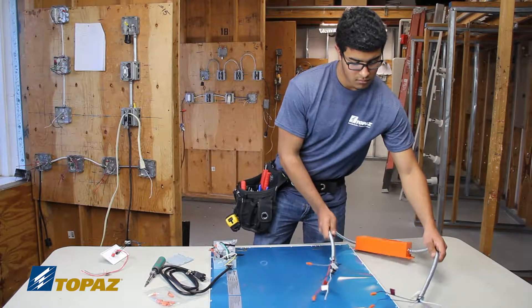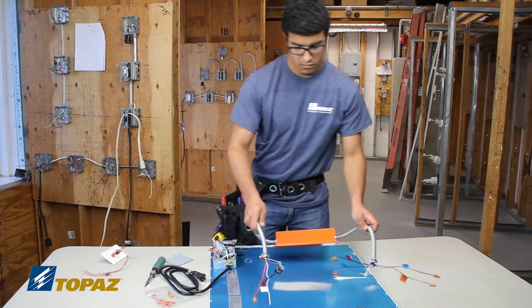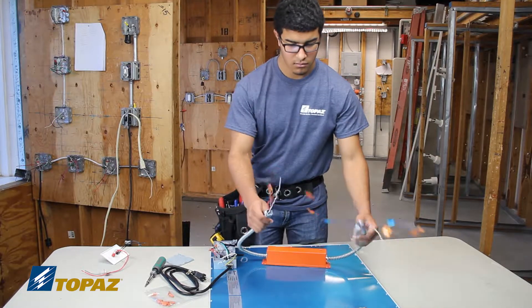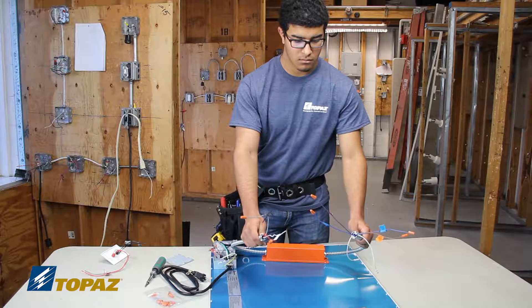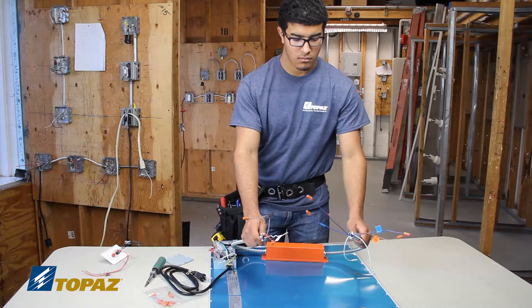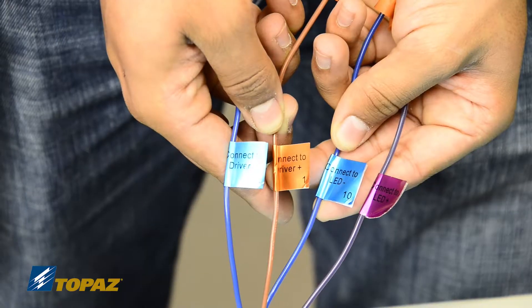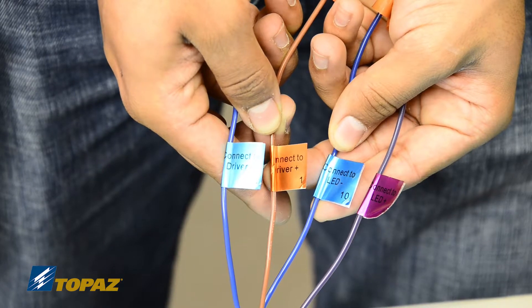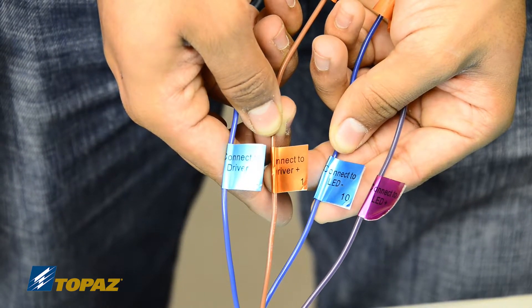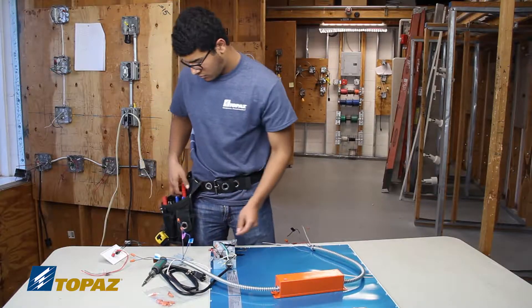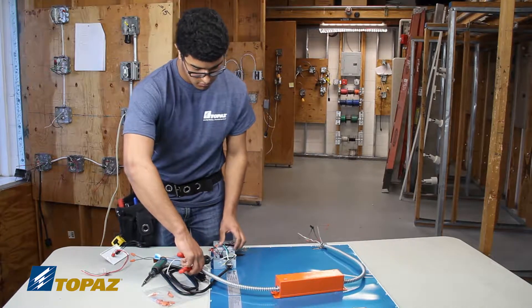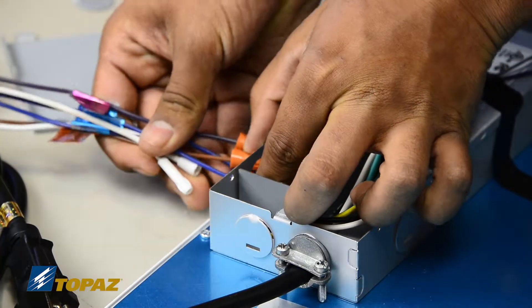The next step is to go ahead and pick up your emergency ballast, making sure you identify both ends. You have the one end which is going to be wired into the line voltage compartment and one for the low voltage. We will be starting with the low voltage, so you'll see that it's identified with the tags that say LED driver. You'll need to remove the knockout on the side of the junction box.